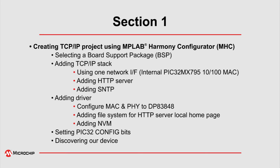Let's start with section 1 by creating the TCP/IP project using MHC. First we will be selecting the board support package. In our demo we will be using the PIC32MX Ethernet starter kit. We will be adding the TCP/IP stack using one network interface. The PIC32MX795 has an internal 10/100 MAC. We will be adding the HTTP server which will serve the local web page. We will add simple network time protocol to allow the SSL library to validate the issue date and expiration date of the application.